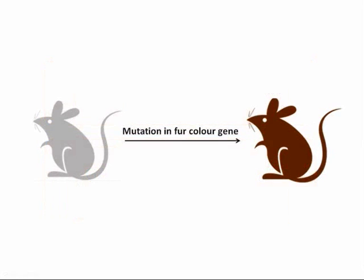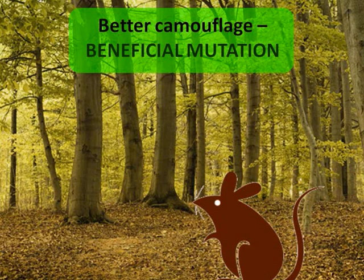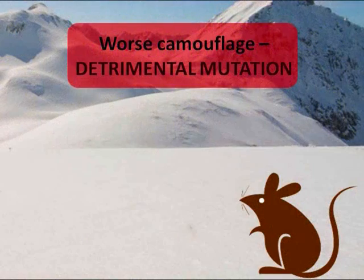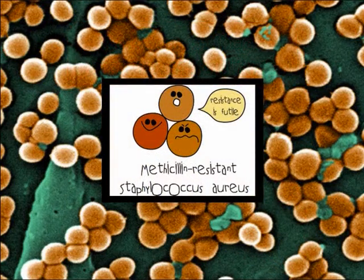For example, a mutation in a gene responsible for the colour of an animal's fur may make its fur much darker than before. This may help them camouflage better and survive from predators more effectively, or may camouflage them less, reducing their chance of survival. Another example is bacteria — many strains are mutating to become resistant to antibiotics. MRSA, Methicillin-resistant Staphylococcus aureus, is one such dangerous bacterial mutant.